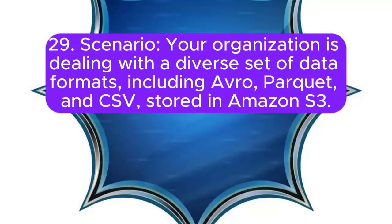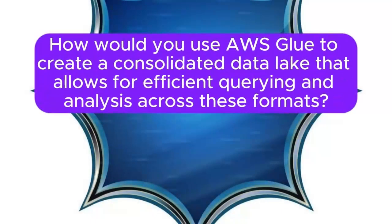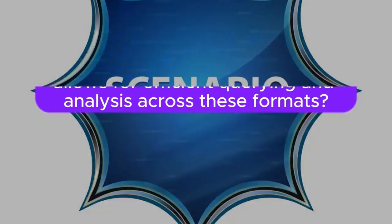Question 29: Your organization is dealing with a diverse set of data formats, including Avro, Parquet, and CSV, stored in Amazon S3. How would you use AWS Glue to create a consolidated data lake that allows for efficient querying and analysis across these formats?